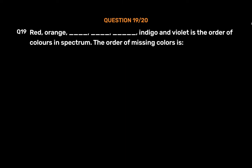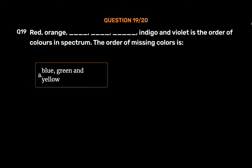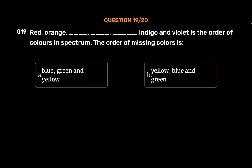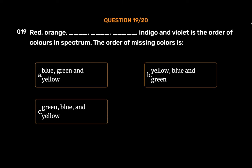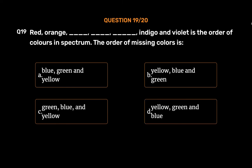Question No. 19: Red, Orange, ___, ___, Indigo, and Violet is the order of colors in the spectrum. The order of missing colors is — Option A: Blue, Green, and Yellow, Option B: Yellow, Blue, and Green, Option C: Green, Blue, and Yellow, Option D: Yellow, Green, and Blue. The correct answer is Option D: Yellow, Green, and Blue.